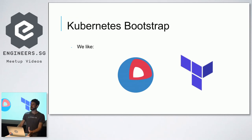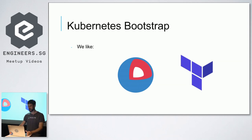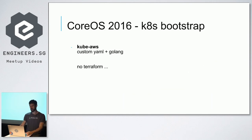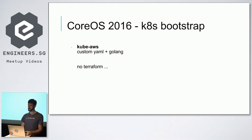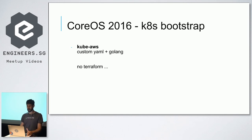When we started looking for bootstrapping solutions, we knew we liked CoreOS and Terraform — that's basically what we ideally wanted to use. The first thing I looked at was Kube-AWS, a project from CoreOS. From what I remember, it was a lot of custom YAML but not Terraform, so it was nice but not great.